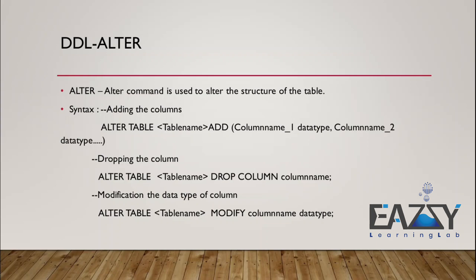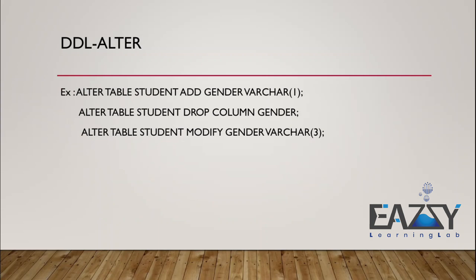The ALTER command is used to alter the structure of the table. For example, if you want to add a new column like a gender column into the table, you use the ALTER command. The syntax is: ALTER TABLE table_name ADD column_name data_type. For example, ALTER TABLE student ADD gender VARCHAR(1) — this will insert that gender column into the table structure.